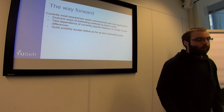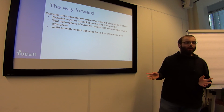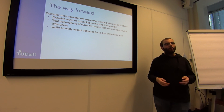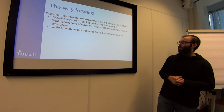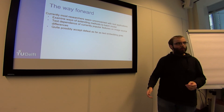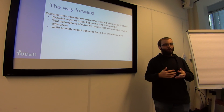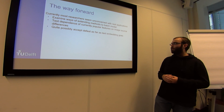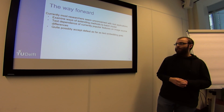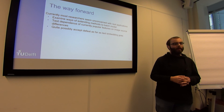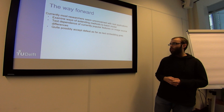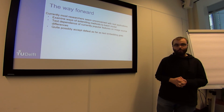The way forward is to examine ways of extending available methods and implementing currently found features in the batch model. We also need to check how image source affects the values of extracted features, since that has only been done for one feature set and needs to be expanded. And quite possibly, we may need to accept that universal steganalysis cannot be done in the general case when it comes to text embedding.